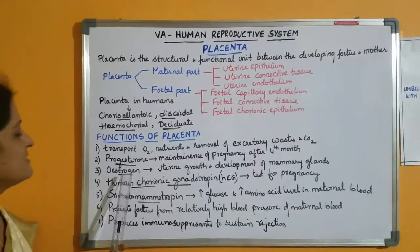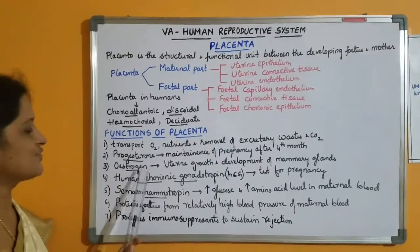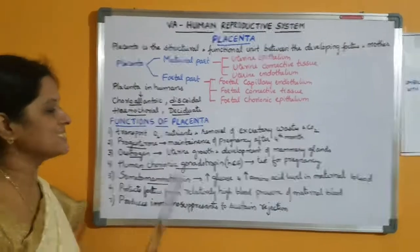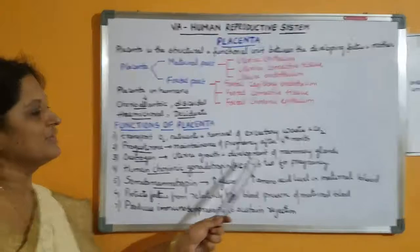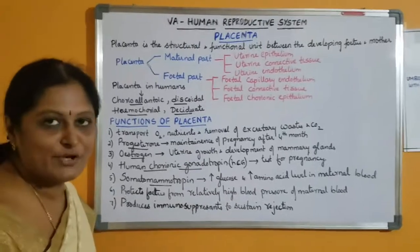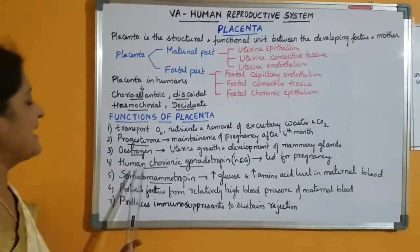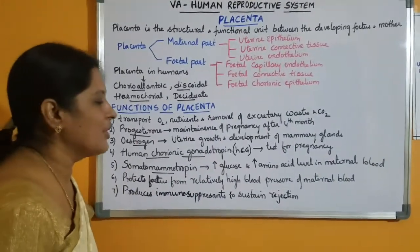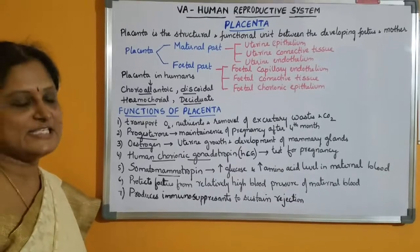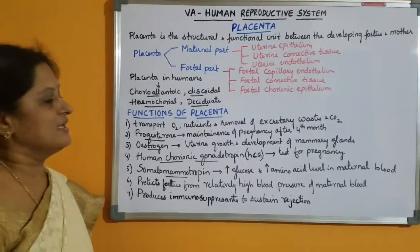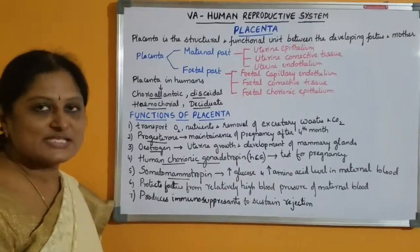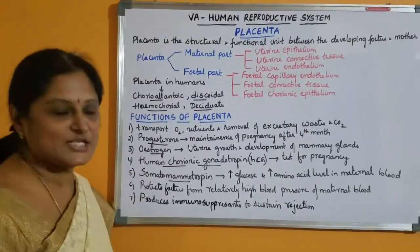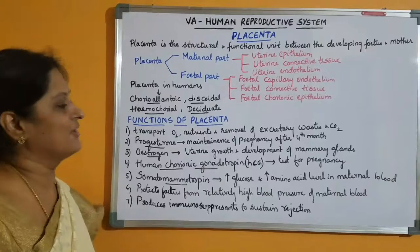The placenta secretes estrogen, which reaches the maternal blood and brings about uterine growth and development of the mammary glands. The placenta also secretes human chorionic gonadotropin (HCG), which helps to sustain the corpus luteum and aids in the production of progesterone.